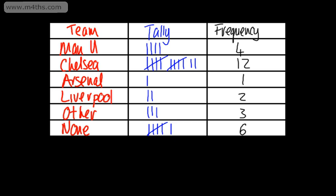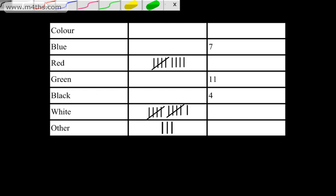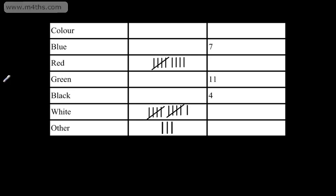Now let's look at completing one. We've got here the colour: blue, red, green, black, white, and other — so this might be a survey on people's favourite colours. We're missing the title of this particular column, which should be the tally, and we're also missing this column here, which would be the frequency.